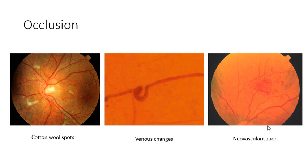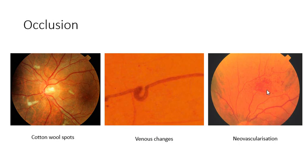Finally, we have neovascularization as the last sign of occlusion. Neovascularization is the term for new blood vessels, caused by vascular endothelial growth factors being released into an area deprived of oxygen in the retina. This lack of oxygen causes the growth of abnormal vessels and fibrous tissue on the retinal surface. These new vessels are fragile and more permeable than normal, and because they're in an abnormal position they break and bleed, giving the appearance of neovascularization.